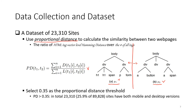The value of proportional distance is between 0 and 1. A value of 0 means the two DOM traces are identical, meaning the website only has one version of the webpage. A larger proportional distance means the website returns different content to different browsers like mobile and desktop — in other words, it has two versions of the webpage. We selected 0.35 as the threshold, and in total we identified over 23,000 websites that have both mobile and desktop versions of web pages.